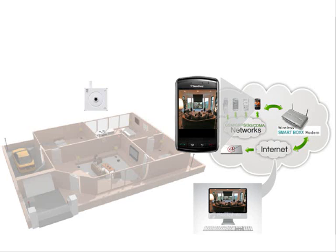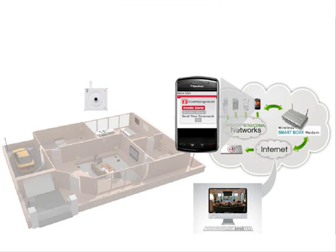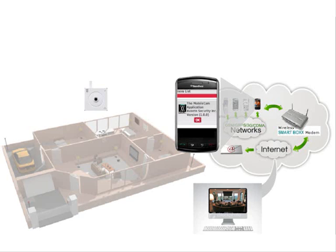The SmartEye can also be enabled as a motion detection alarm when no one is at home. Once alarmed, anyone entering its field of view will generate an image of the intruder that can be transmitted to your choice of email addresses.